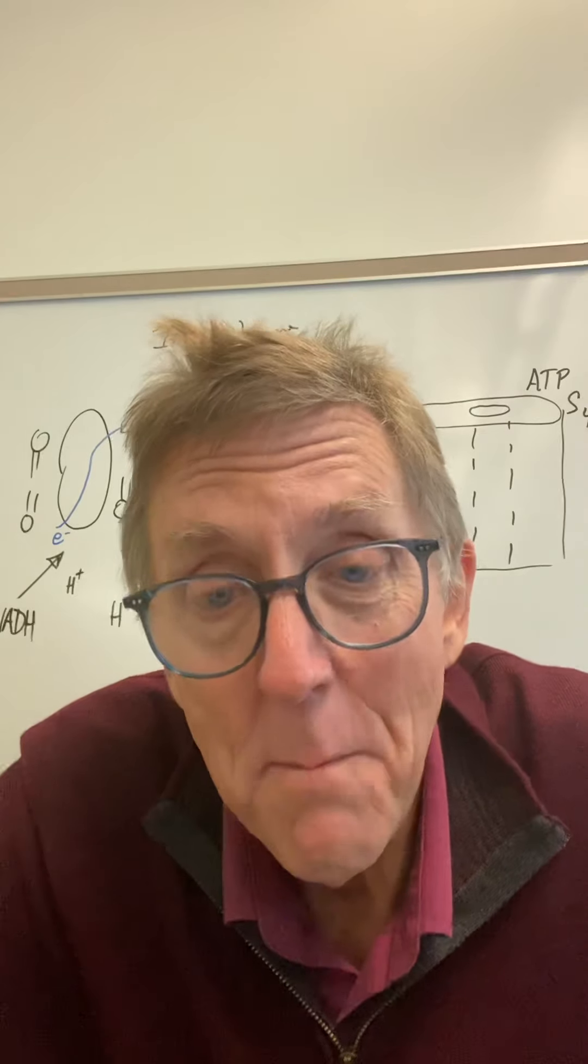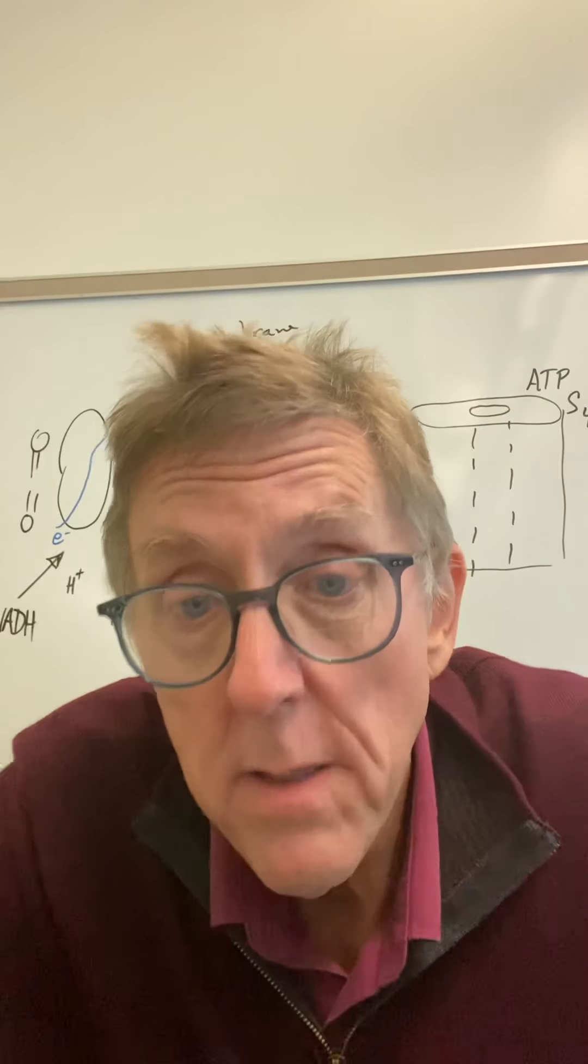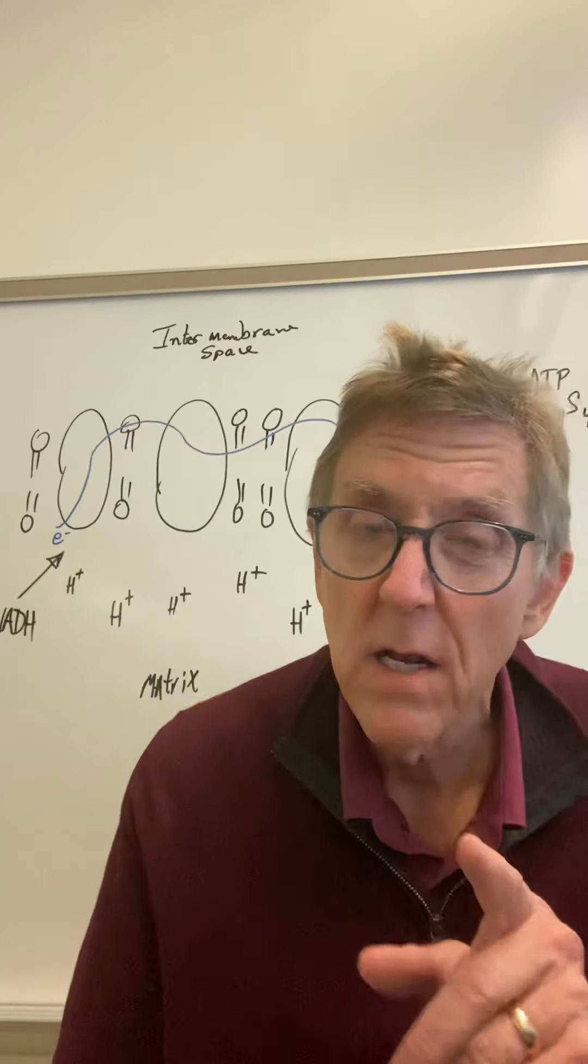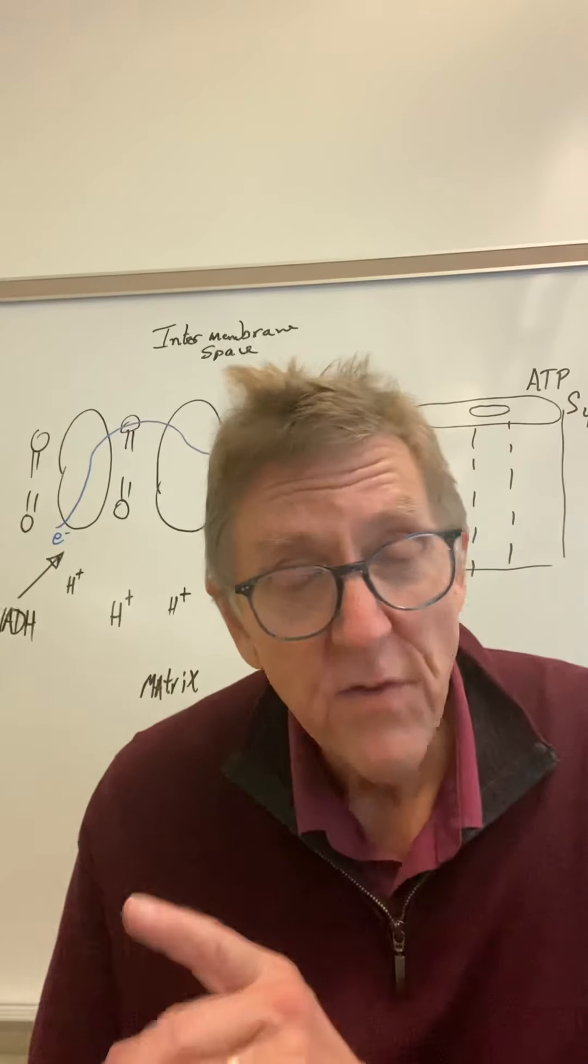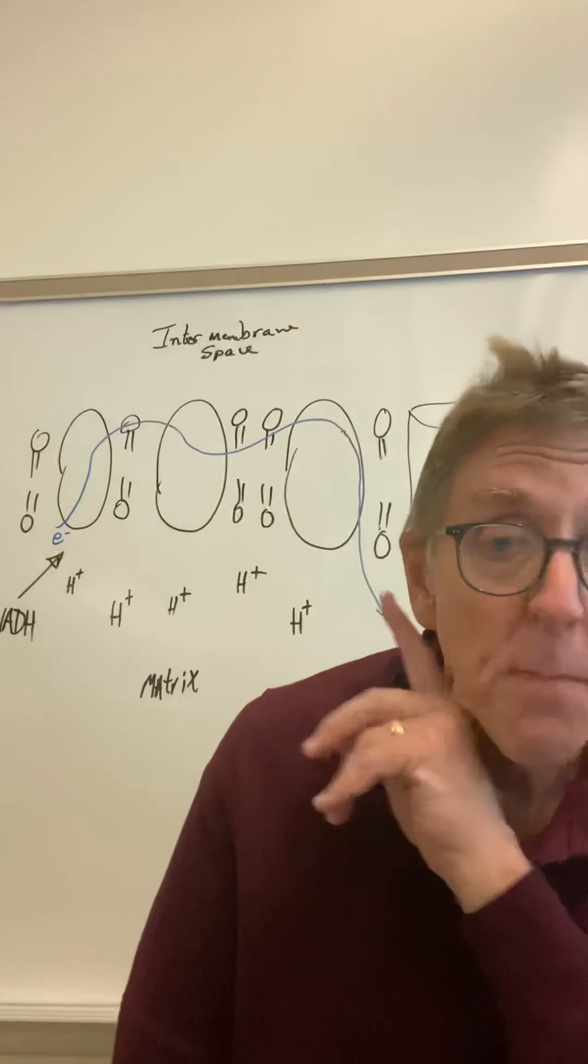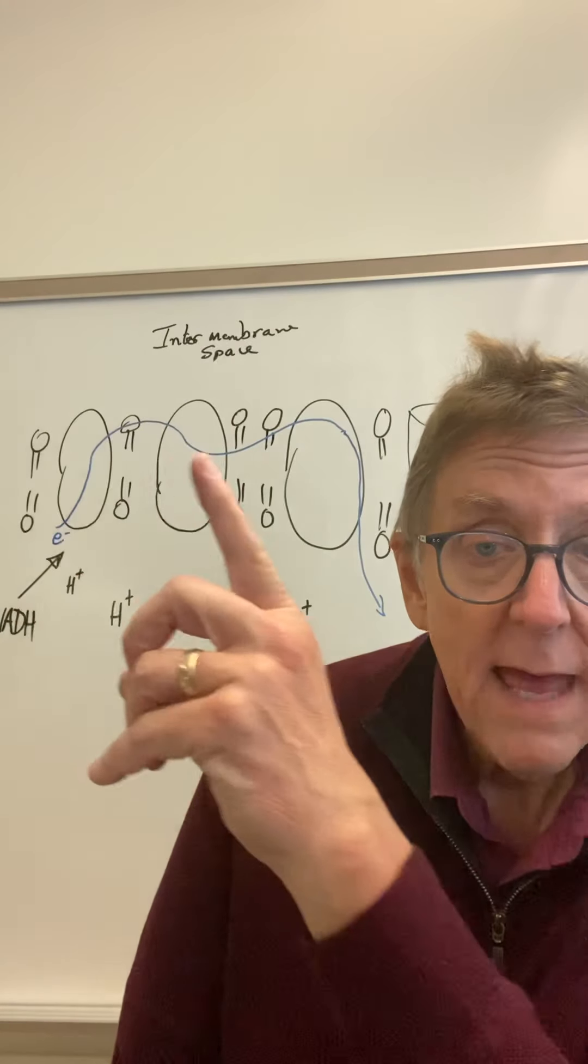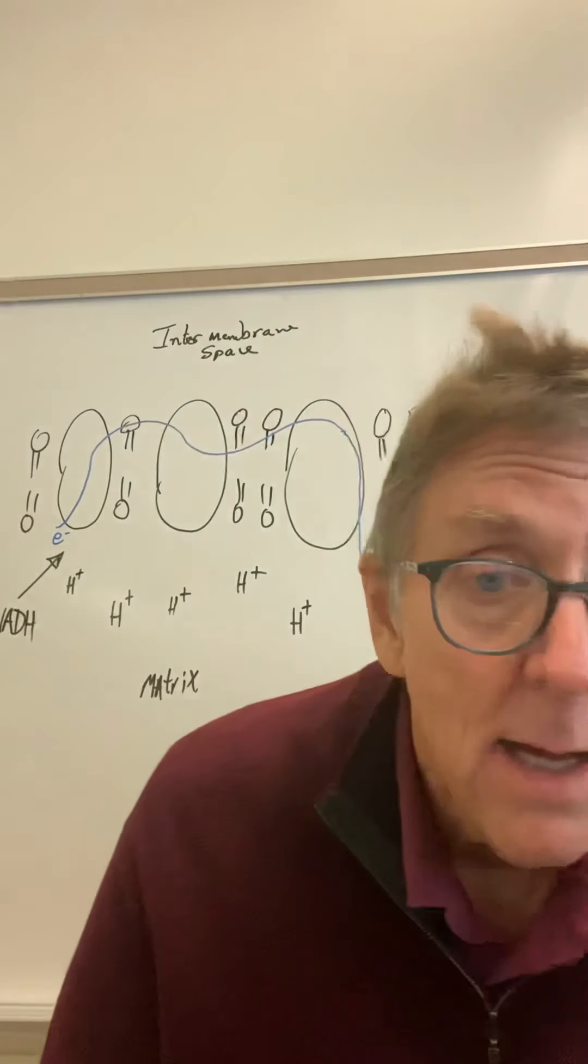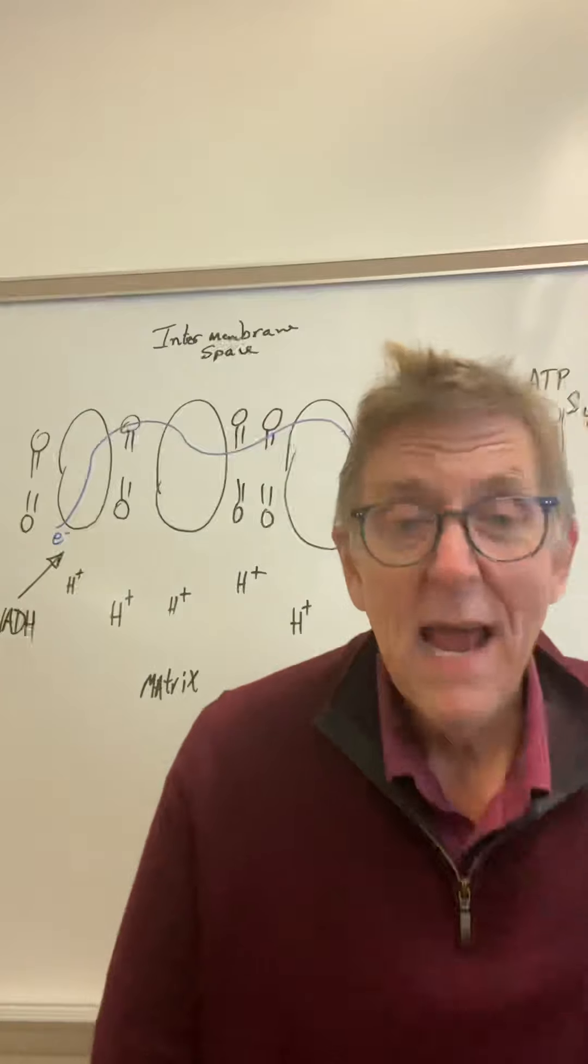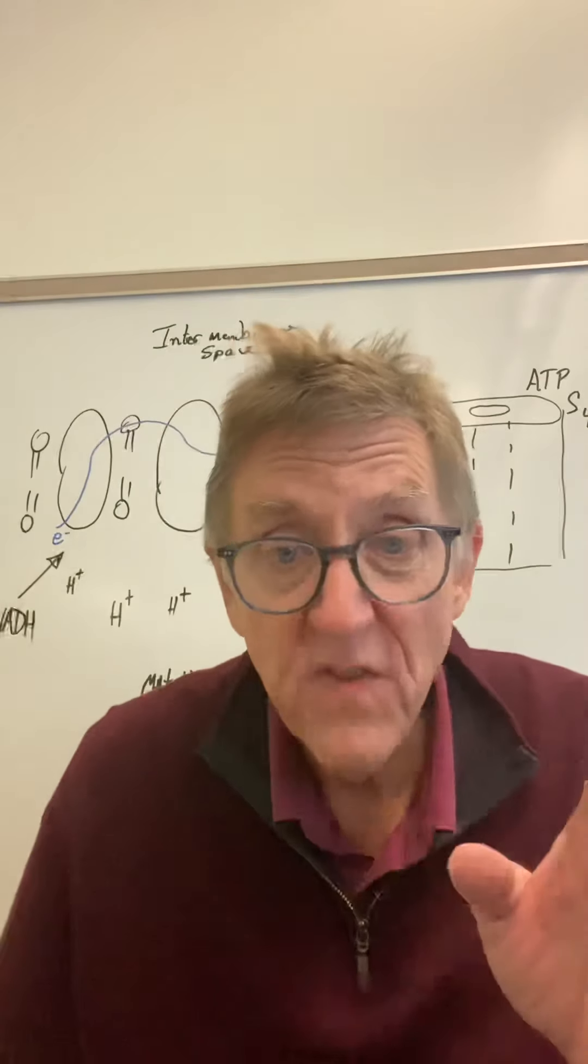Those electrons are picked up by molecules called electron carriers. So what did we say they're going to do? They go from the matrix over to the cristae. As part of the cristae, we have these right here—those round things that are in the membrane—those are the cytochromes.